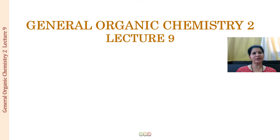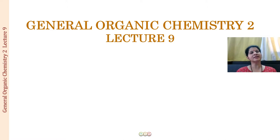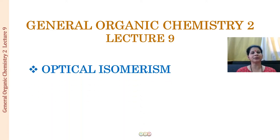So far in GOC Part 1, we had a detailed discussion on the nomenclature of organic compounds. In Part 2, we are discussing isomerism. In the first 8 lectures of this course, we had a detailed discussion on structural isomerism, then we started stereoisomerism, and wound up with a discussion on geometrical isomerism. Now moving further, we will be starting with a discussion on optical isomerism.